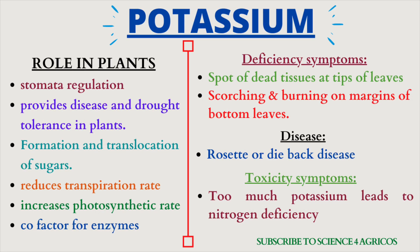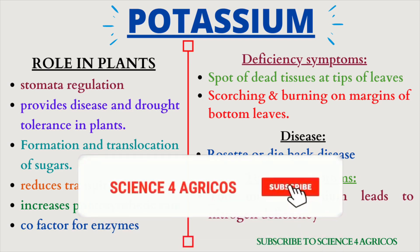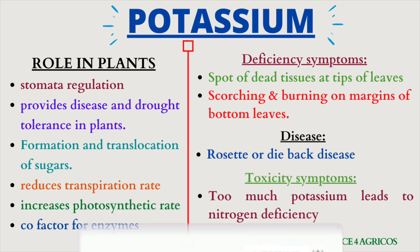Now let's learn about potassium. Potassium is known to be involved in stomatal regulation. It provides disease and drought tolerance in plants. It is involved in the formation and translocation of sugars, helps in reducing the transpiration rate and increasing the photosynthetic rate, and acts as a co-factor for many enzymes.